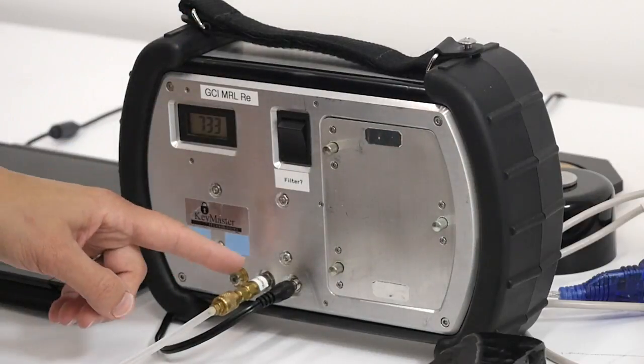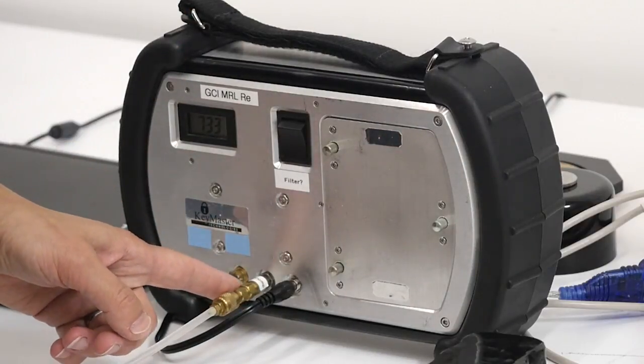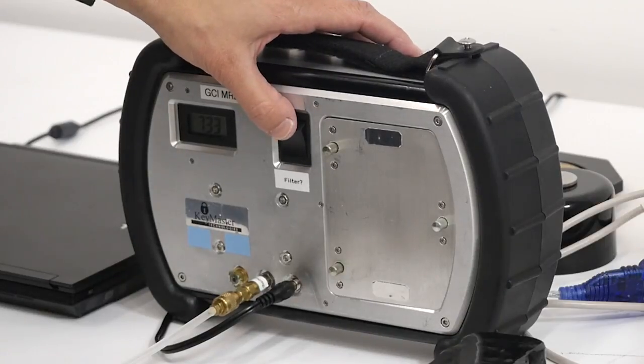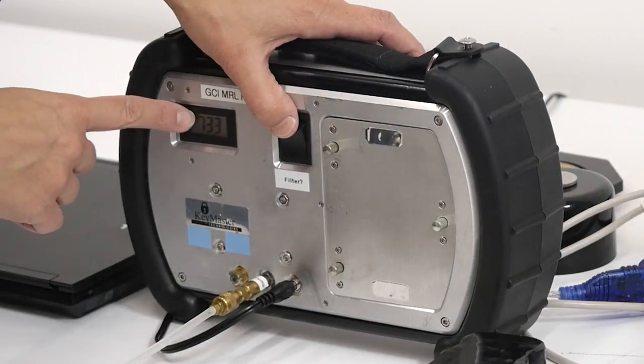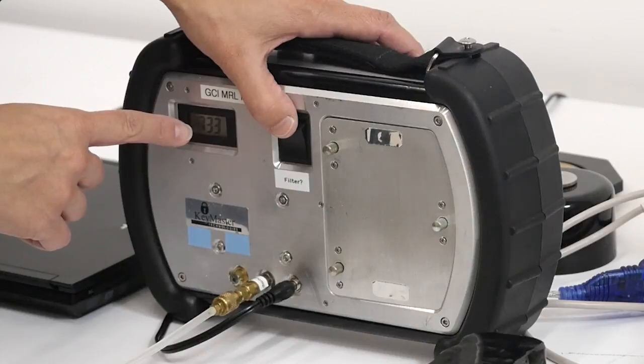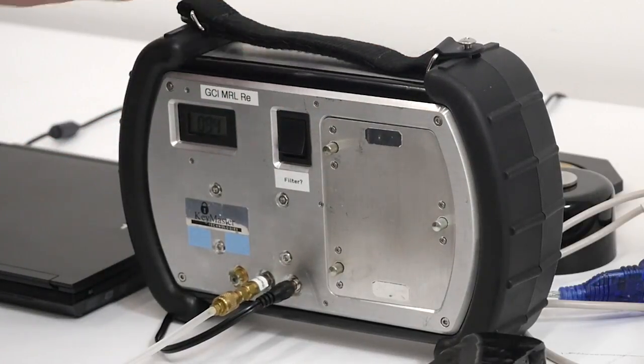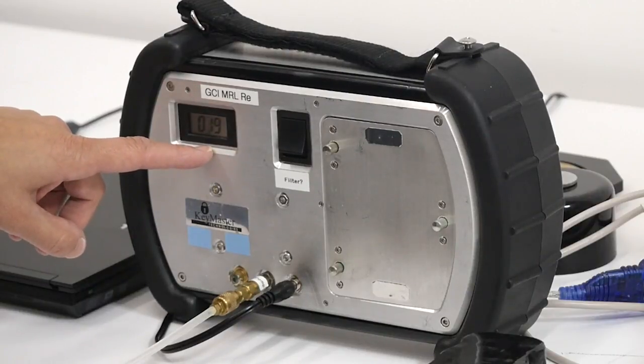Again, you can hear a click when the brass terminal is securely attached to the pump. Now we can turn the pump on using this switch. Watch the numbers. They start out around 700 torr. Once I turn it on, they should quickly decrease down under 10 torr.